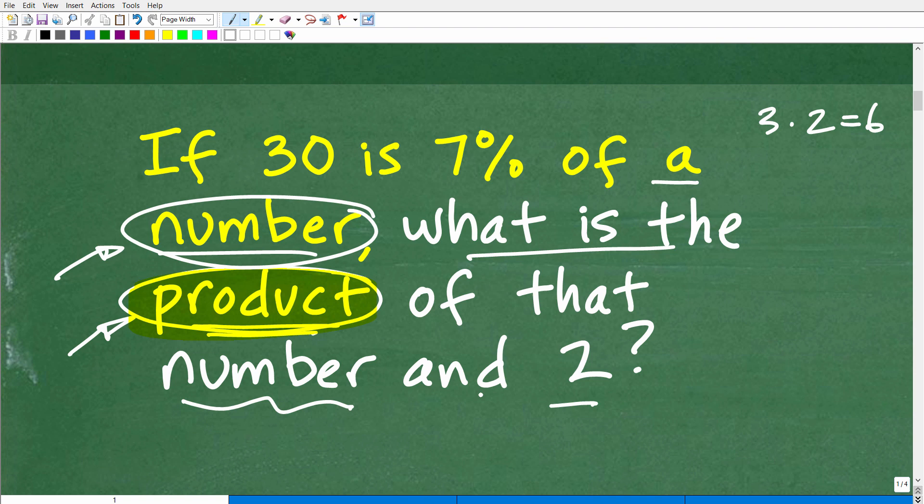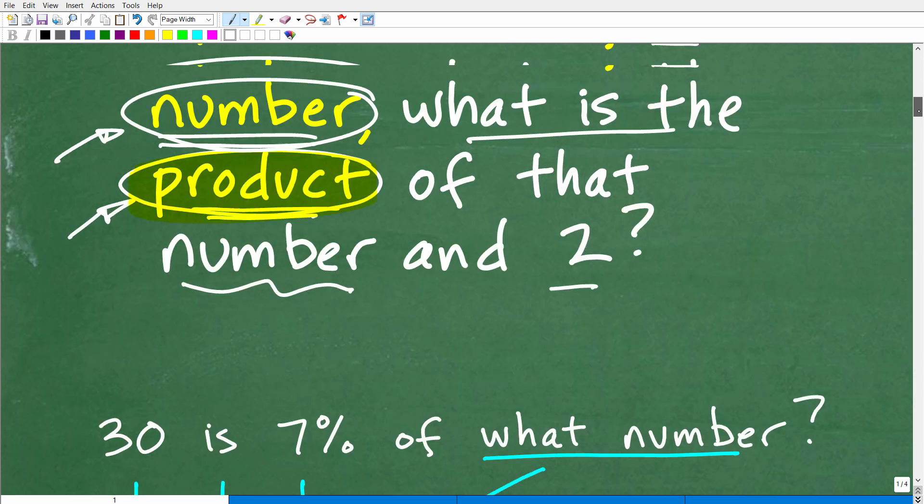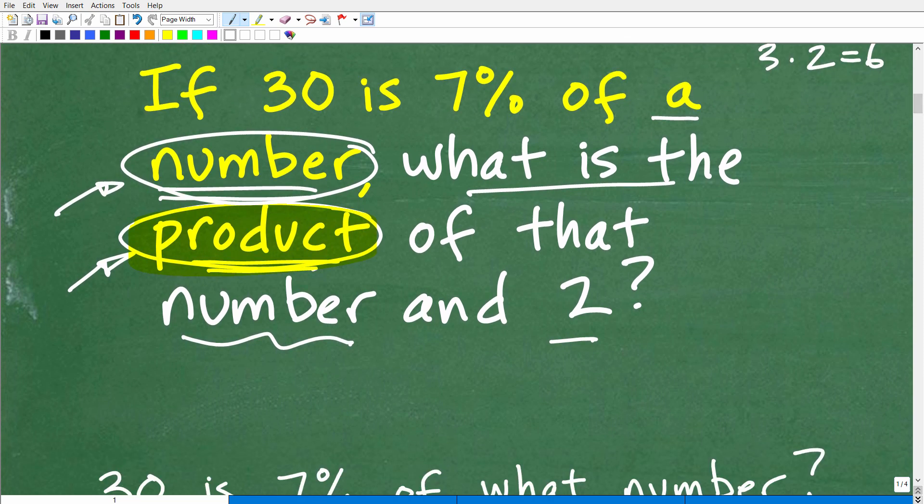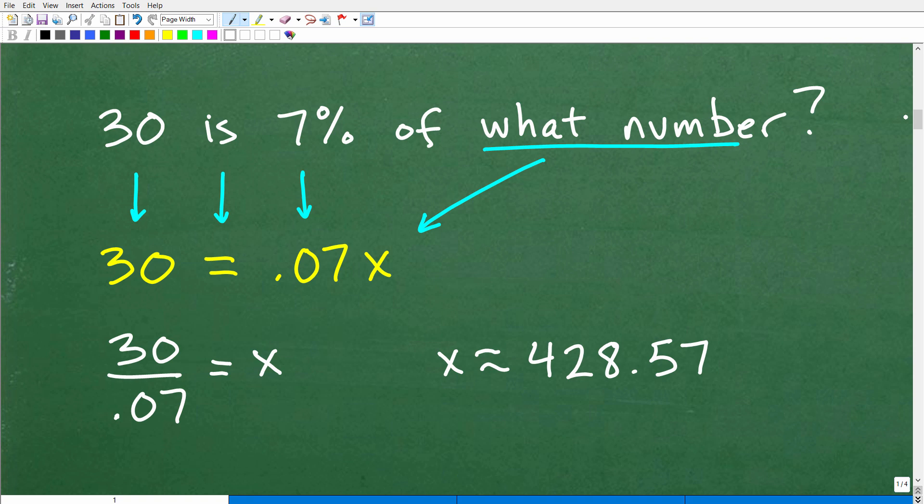So we're going to kind of break this up into two separate problems. The first part of this problem is figuring out what is the number. And once we have that number, then we'll find the product of that particular number and two. So let's go ahead and get into that right now. So here is that part of this word problem broken down in this sentence here. So 30 is 7% of what number? That's basically the question that's being asked right here. But we can use algebra to solve this problem.